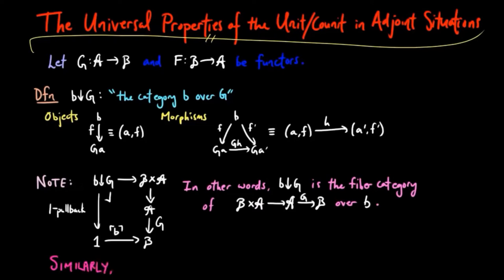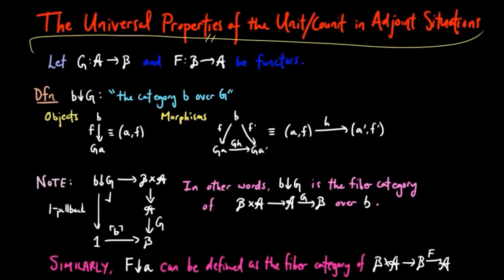Similarly, F over A can be defined as the fiber category of the following functor over the object A.